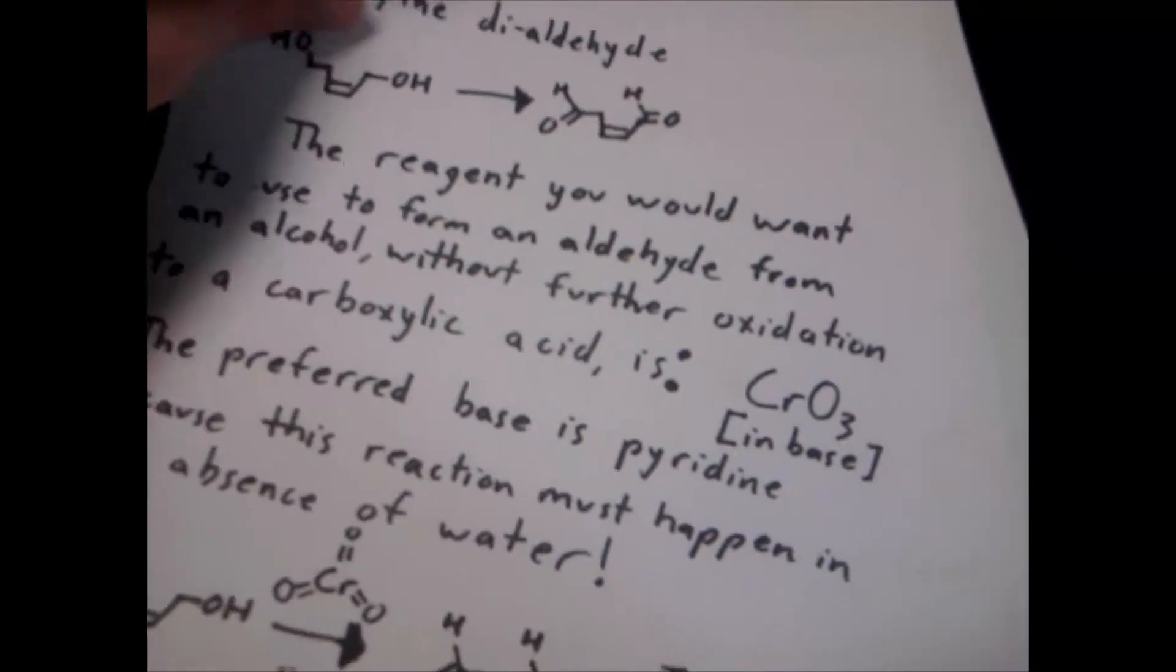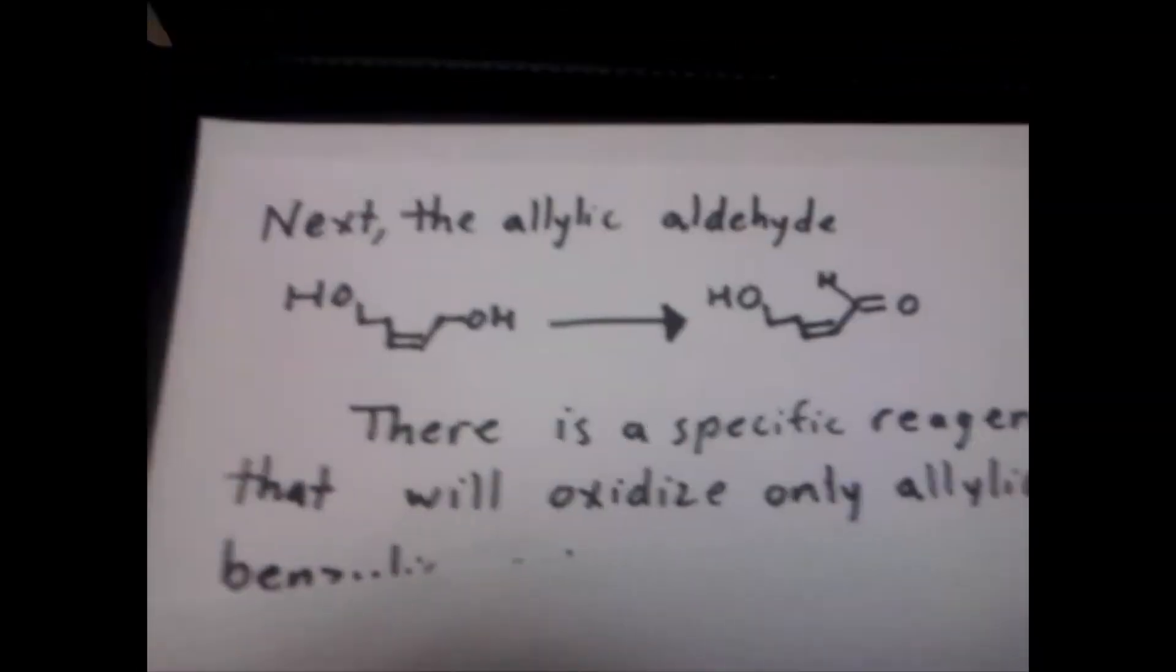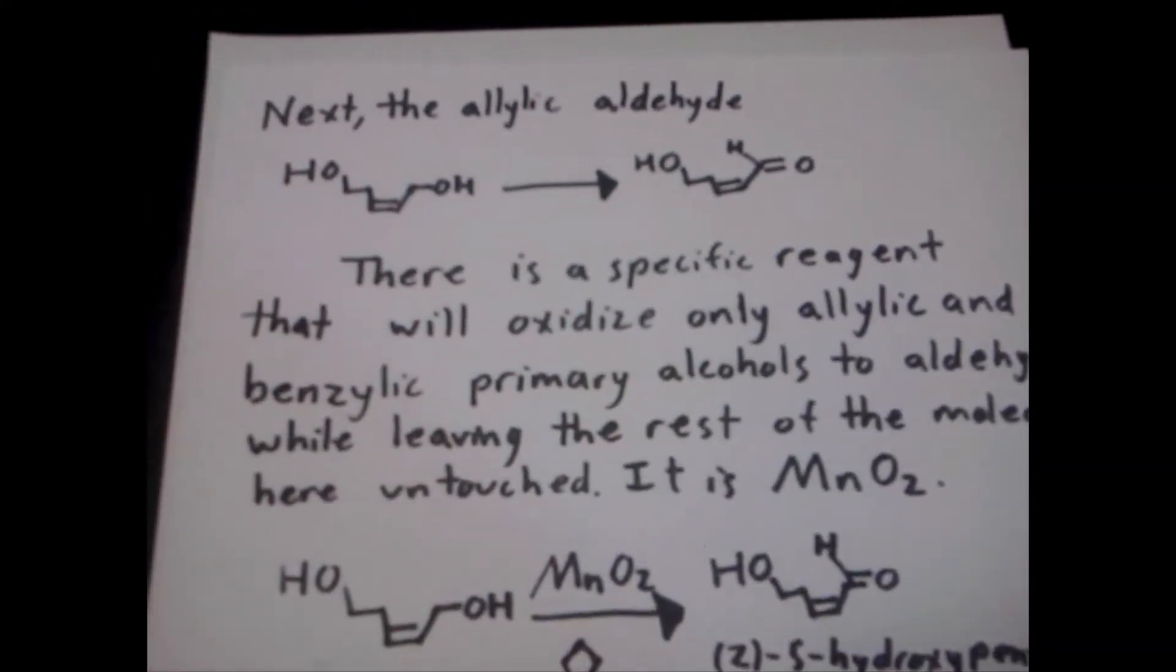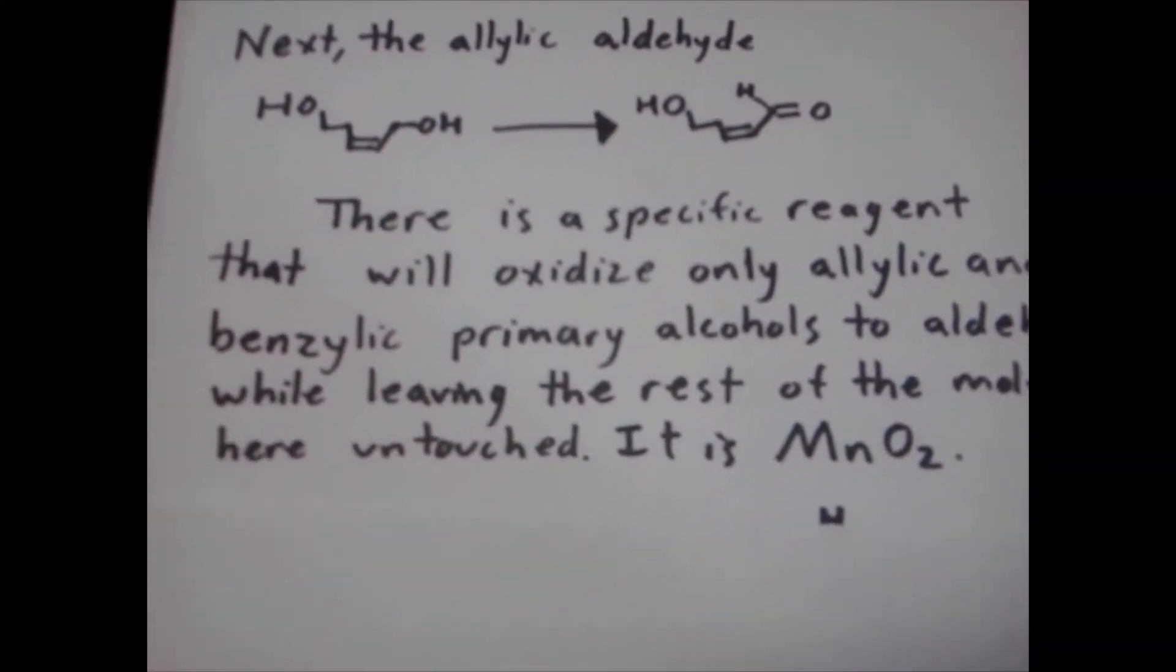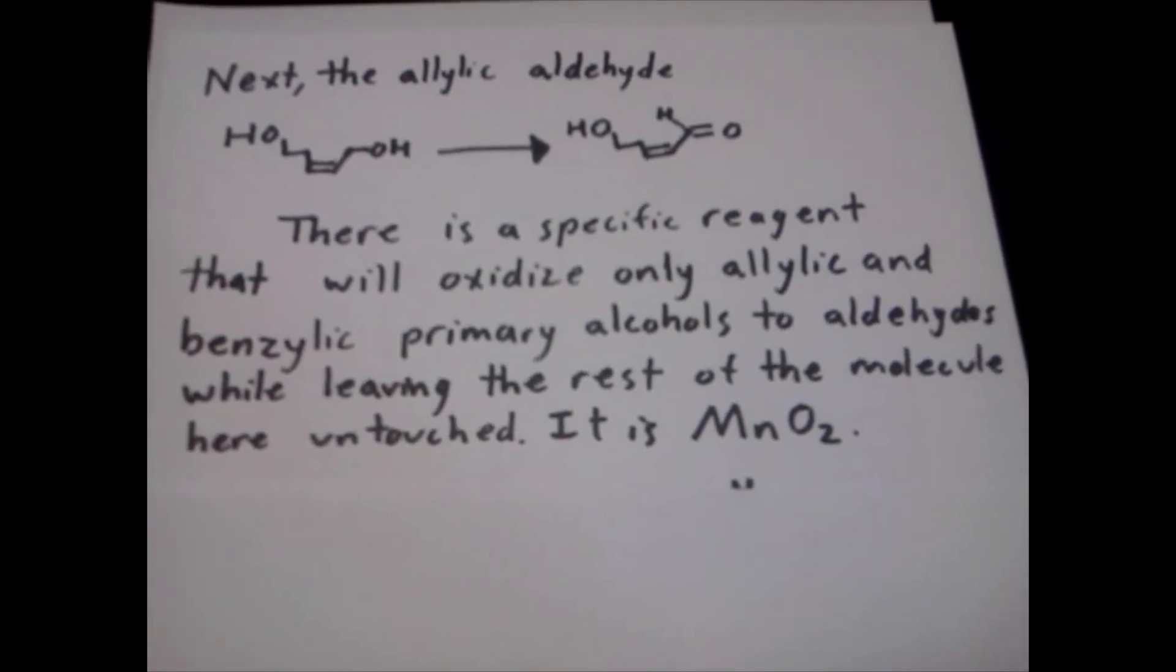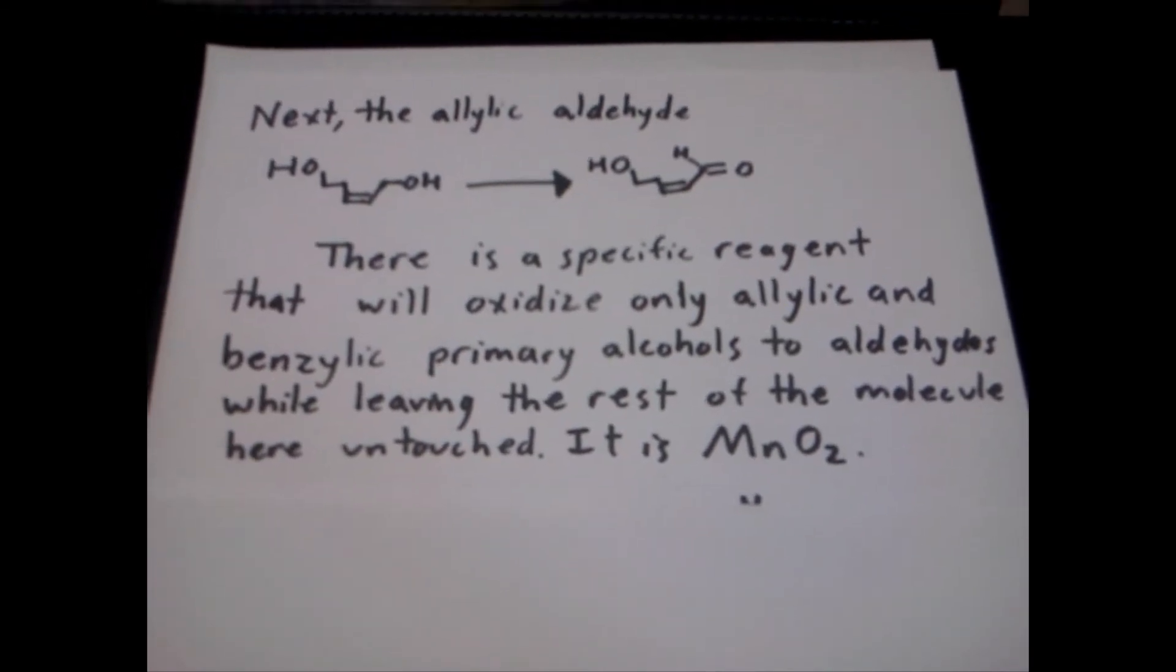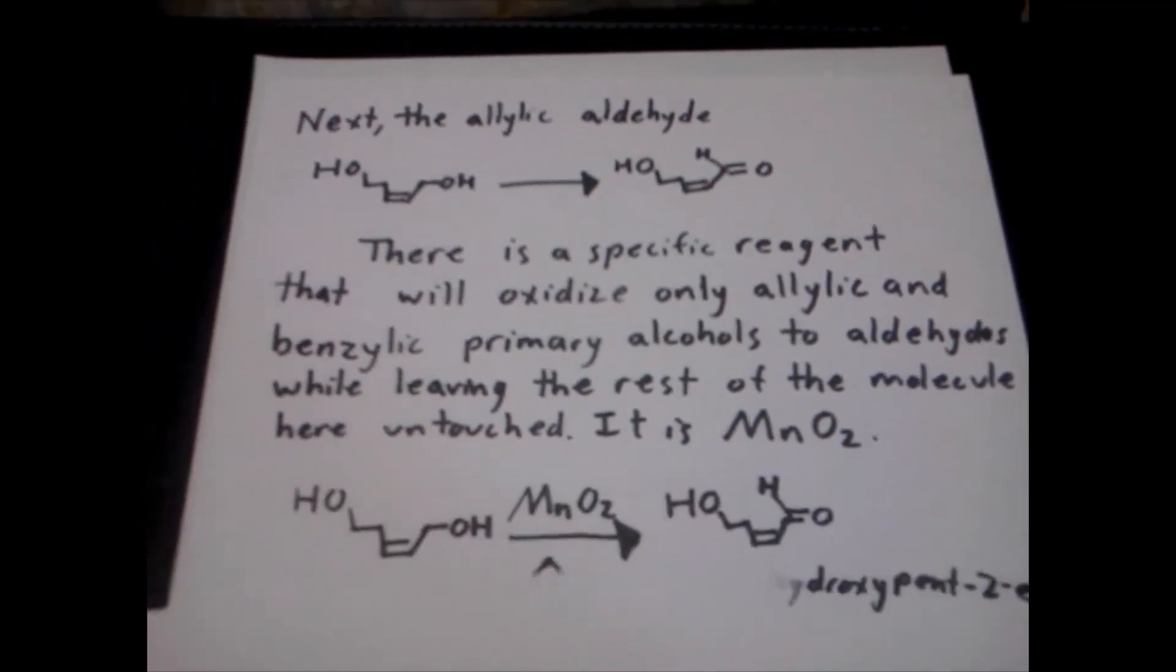On to the next question: the allylic oxidation. There is a specific reagent that will oxidize only allylic and benzylic primary alcohols to aldehydes while leaving the rest of the molecule here untouched. It is manganese dioxide, MnO2.